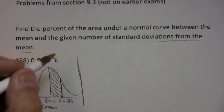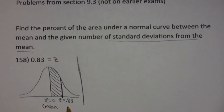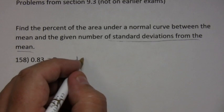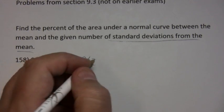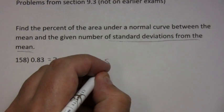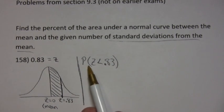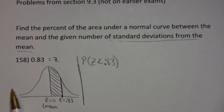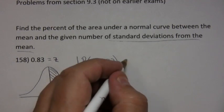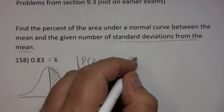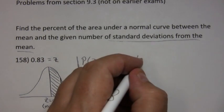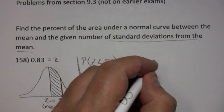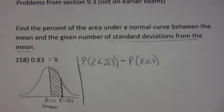when you're finding the area between two Z values, you simply take the bigger number, the one to the right, and look up the probability that it's less than that from the table. And then you take the leftmost number, which in this case is 0, and subtract the 2.